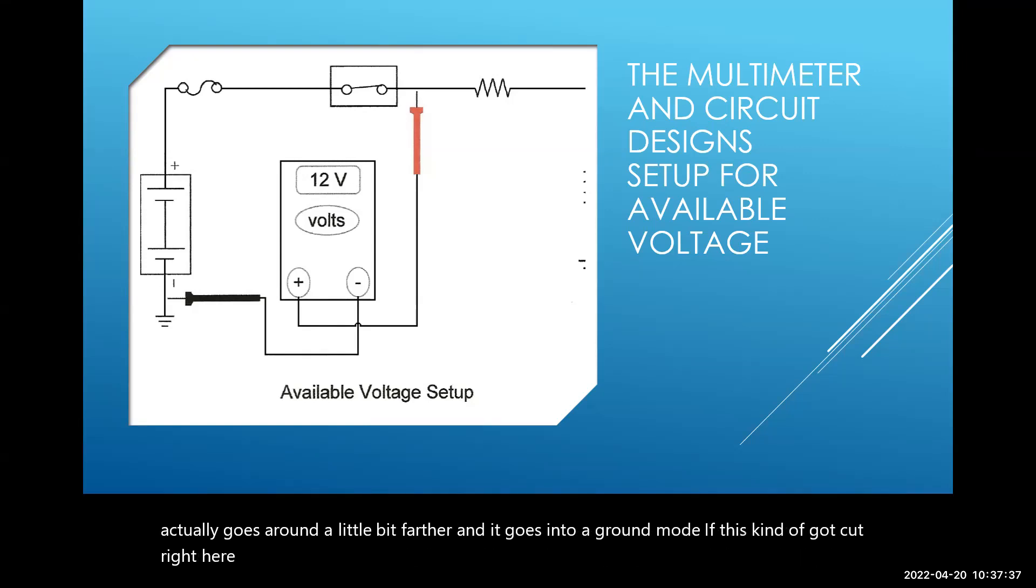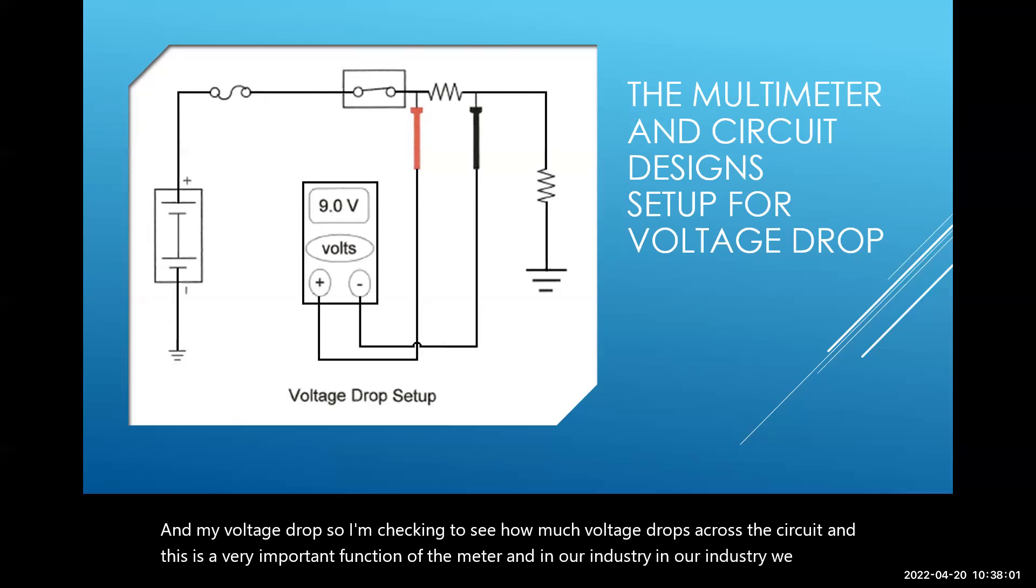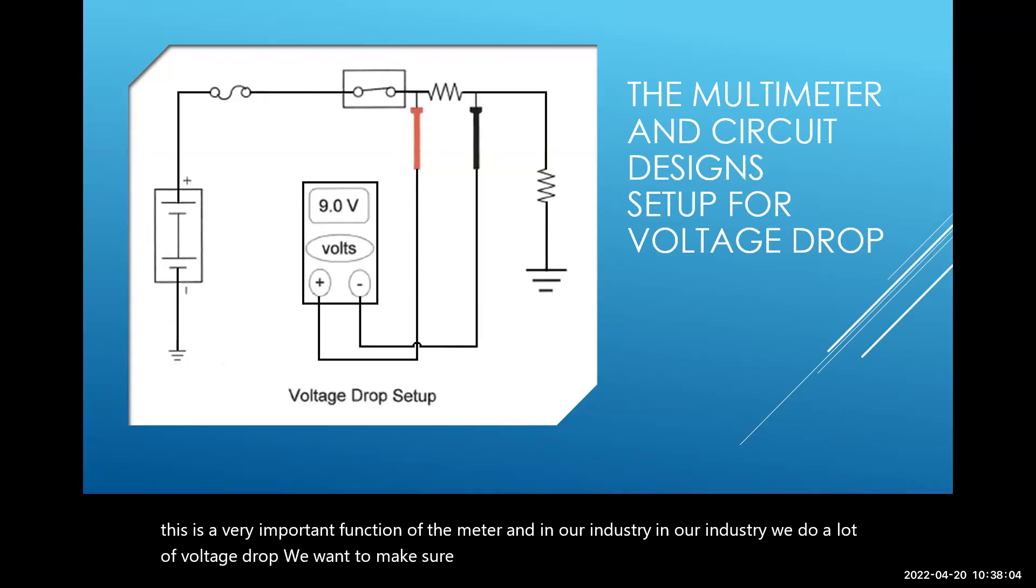Here I'm just checking my voltage after the switch. I can actually check my voltage drop. So I'm just checking to see how much voltage drops across the circuit. And this is a very important function of the meter. In our industry we do a lot of voltage drop. We want to make sure there's available voltage. If there's an unspecified amount of voltage reflecting, we'll start thinking it's probably a resistance someplace, and that's where we have to isolate that too.